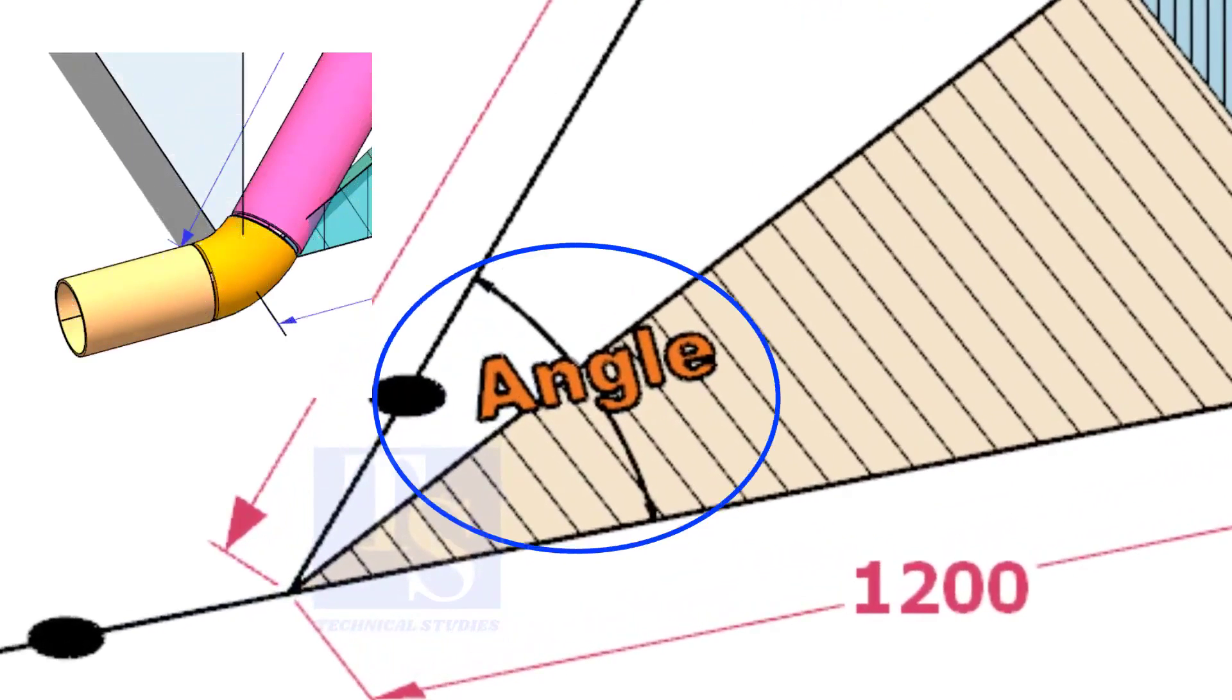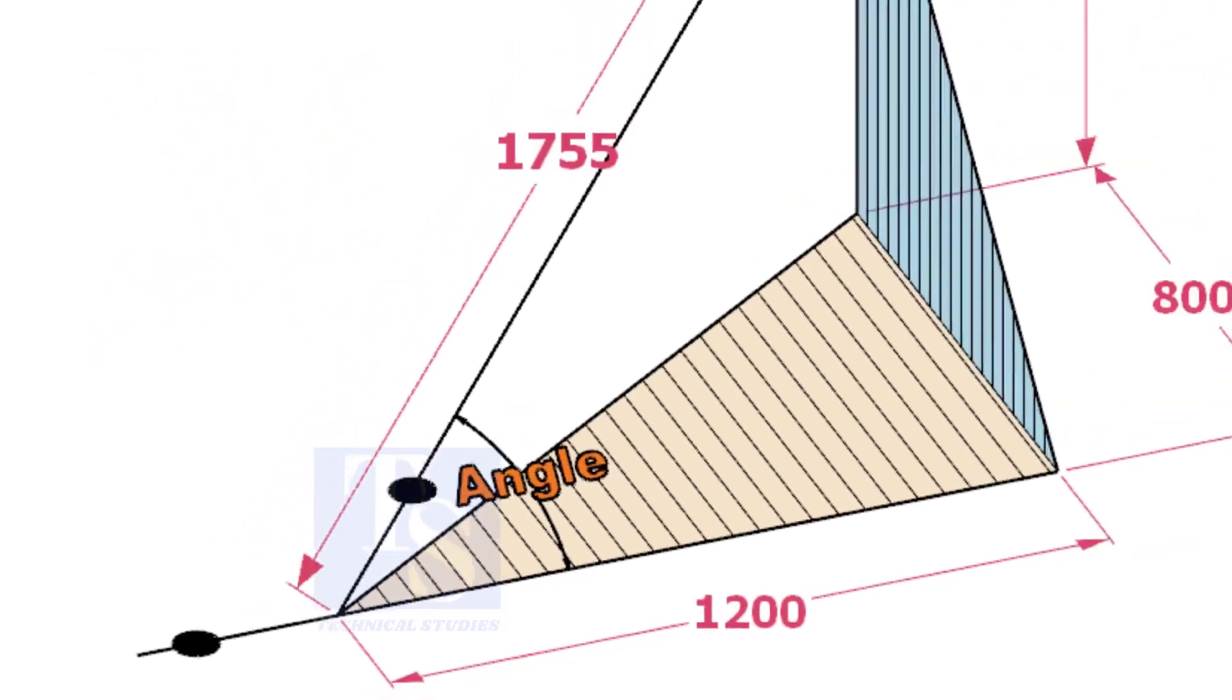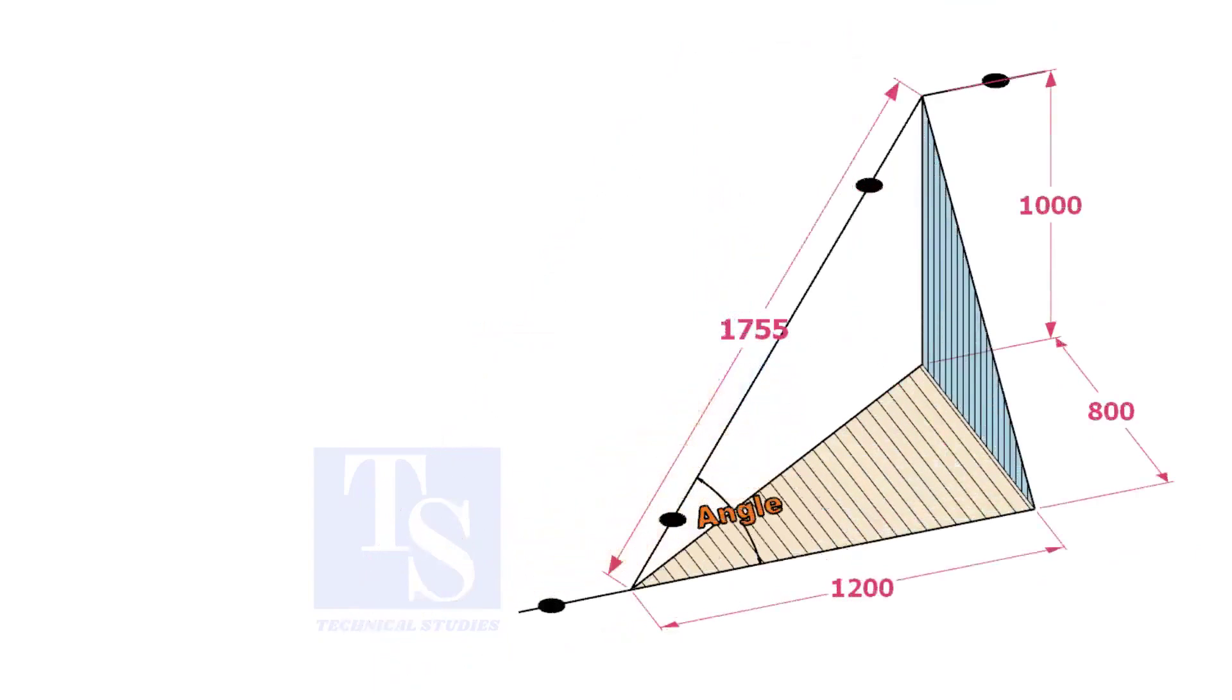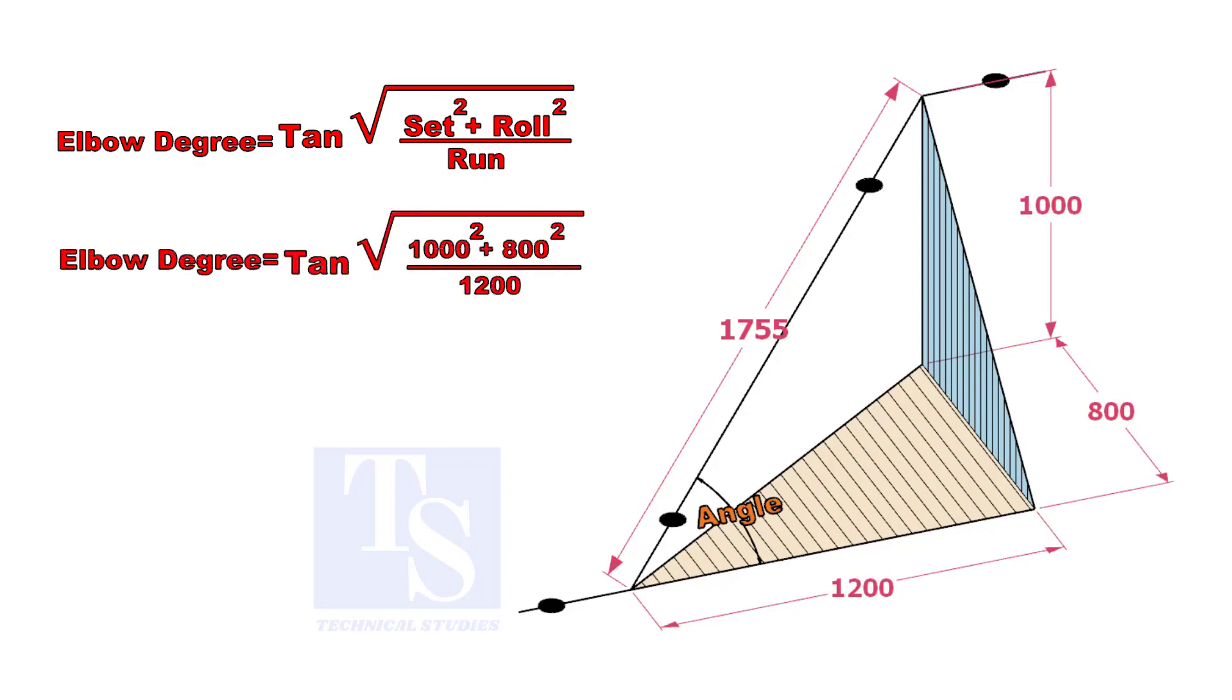Let us calculate the degree of the elbow or the including angle. The formula is the root of the set and the roll is divided by run into tan.